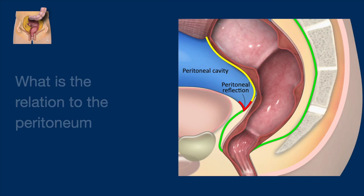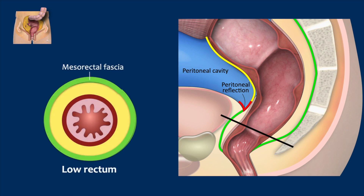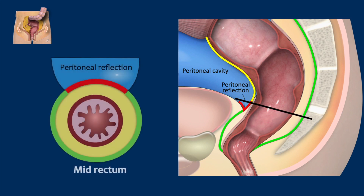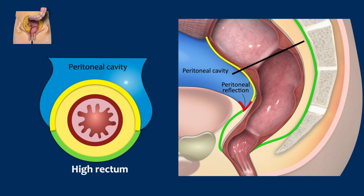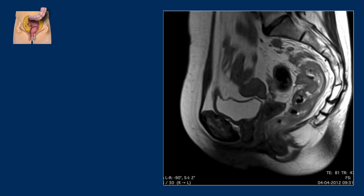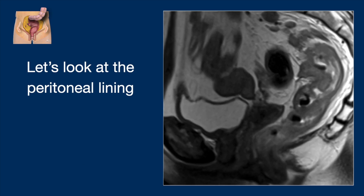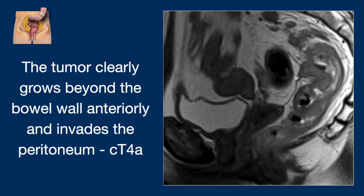Let's go back to the peritoneal reflection. A tumor at this level in the lower rectum may involve the mesorectal fascia or any organ, but it cannot invade the peritoneum. At the mid-level on the anterior or lateral side, it may involve the peritoneum. And at this level in the high rectum on the anterior or lateral side, it may also involve the peritoneum. In our case, the tumor clearly grows beyond the bowel wall anteriorly and invades the peritoneum — this is clinical stage T4a.